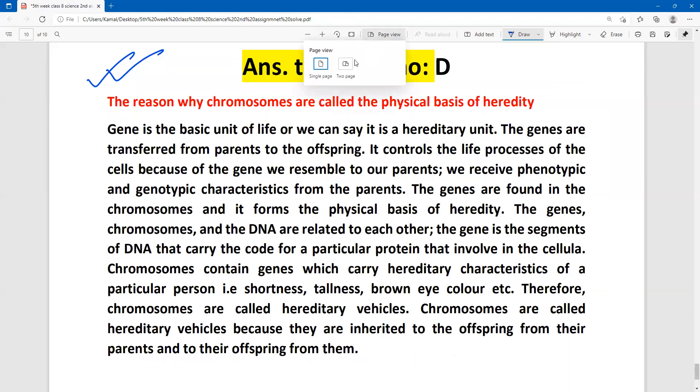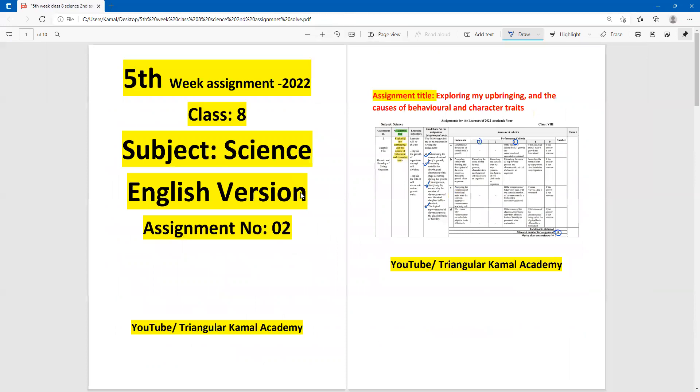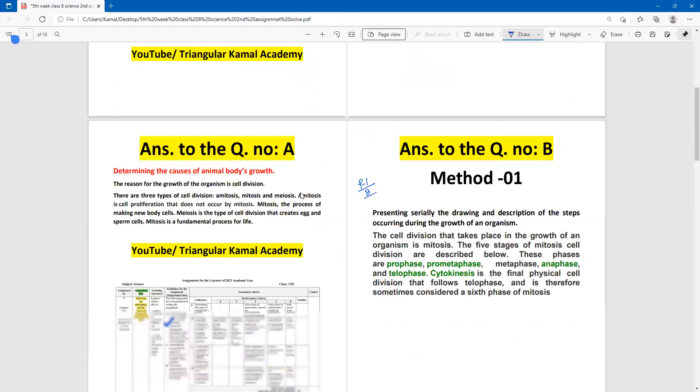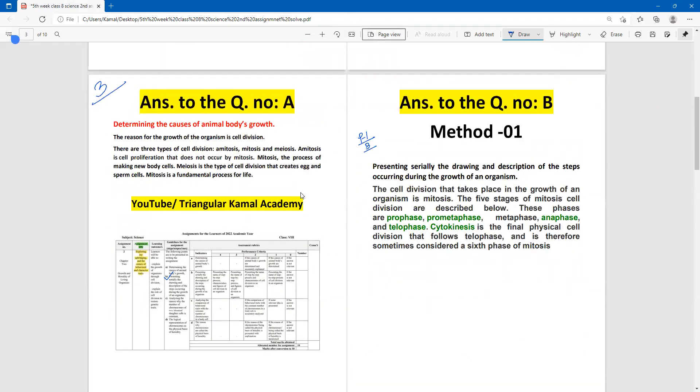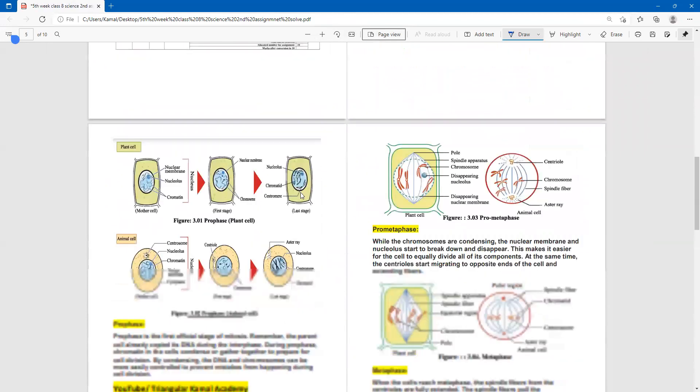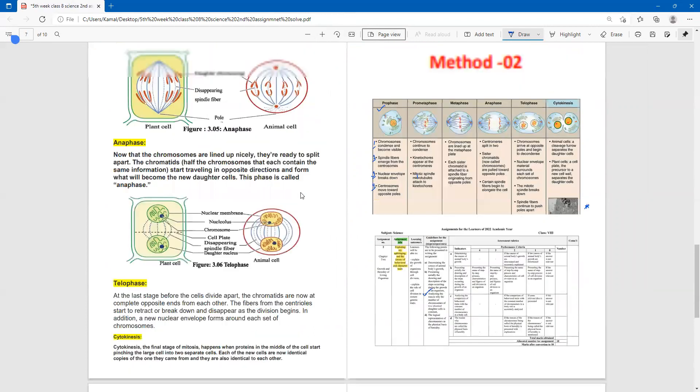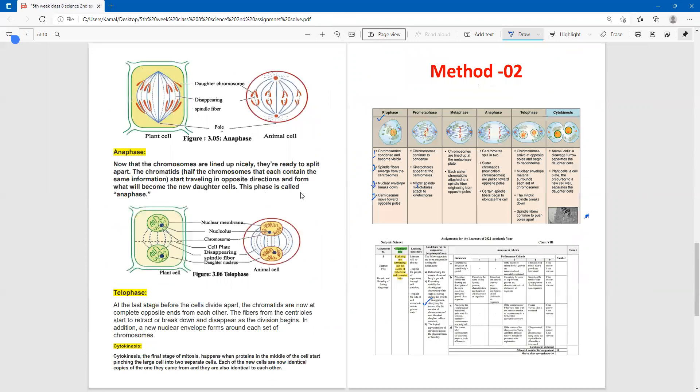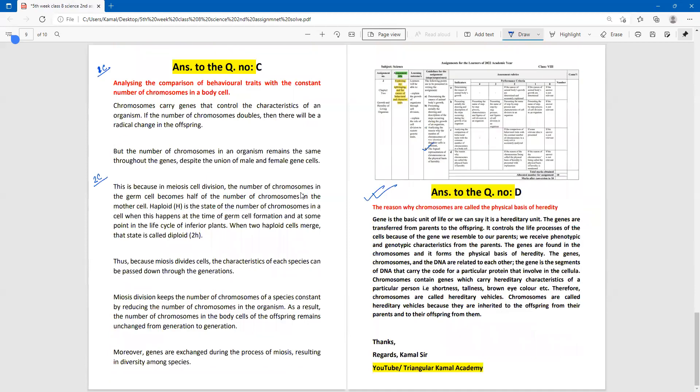Dear students, now we can show two pages at a time. Page number one. Page number two. Then here page number three and four. This is page three, and this is four. Here this is page five, and this is six. Next stage, page seven, and this is page eight. And finally, this is nine, and this is ten.